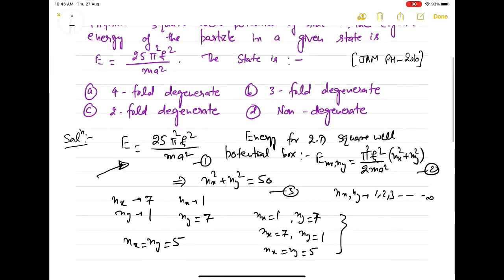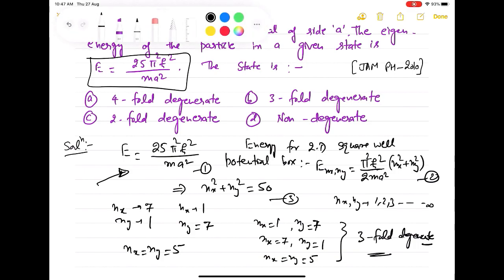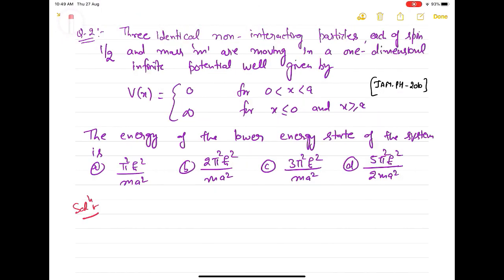This particular state in which the energy of the particle is equal to 25π²ℏ²/(ma²), it turns out to be threefold degenerate. This question was asked in an Indian exam, JAM Physics 2010. This is a joint admission test to MSc conducted by Indian Institute of Technology. Option B is correct, threefold degenerate.